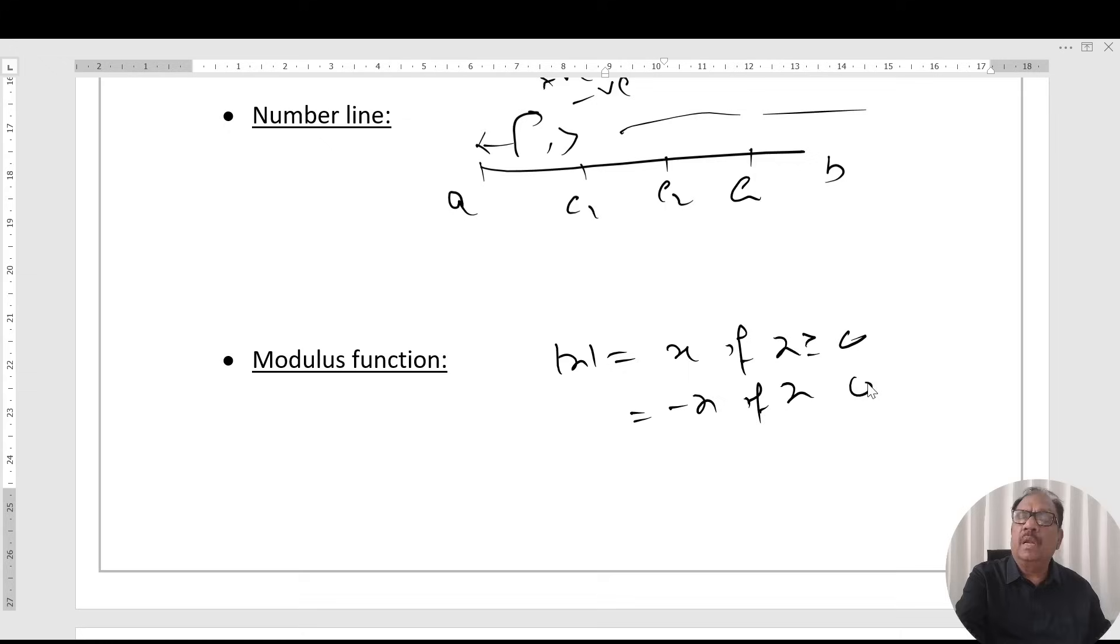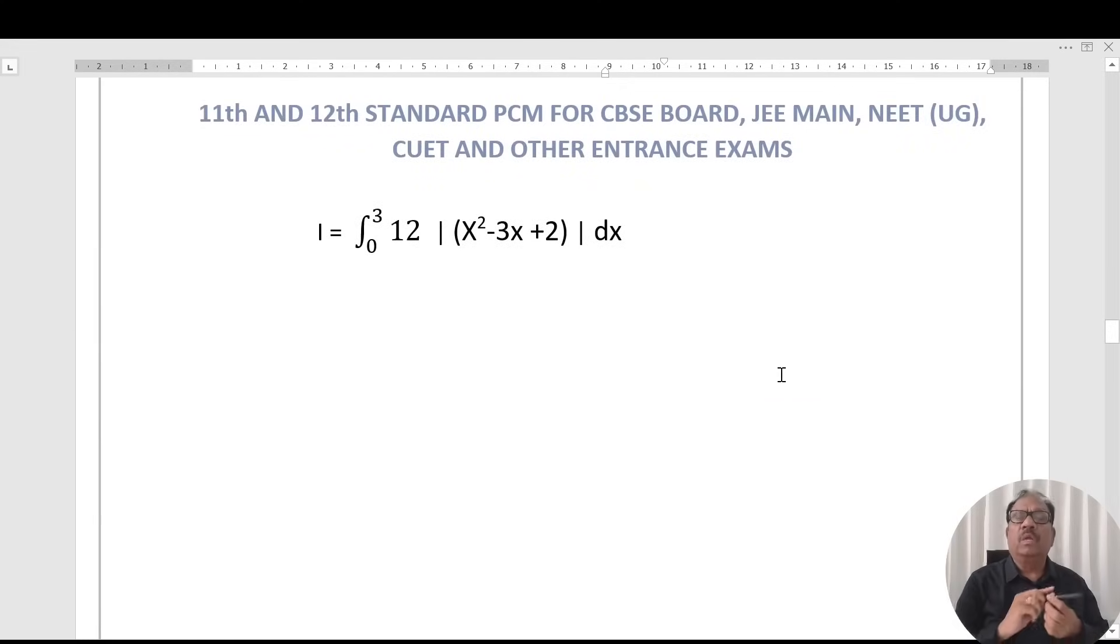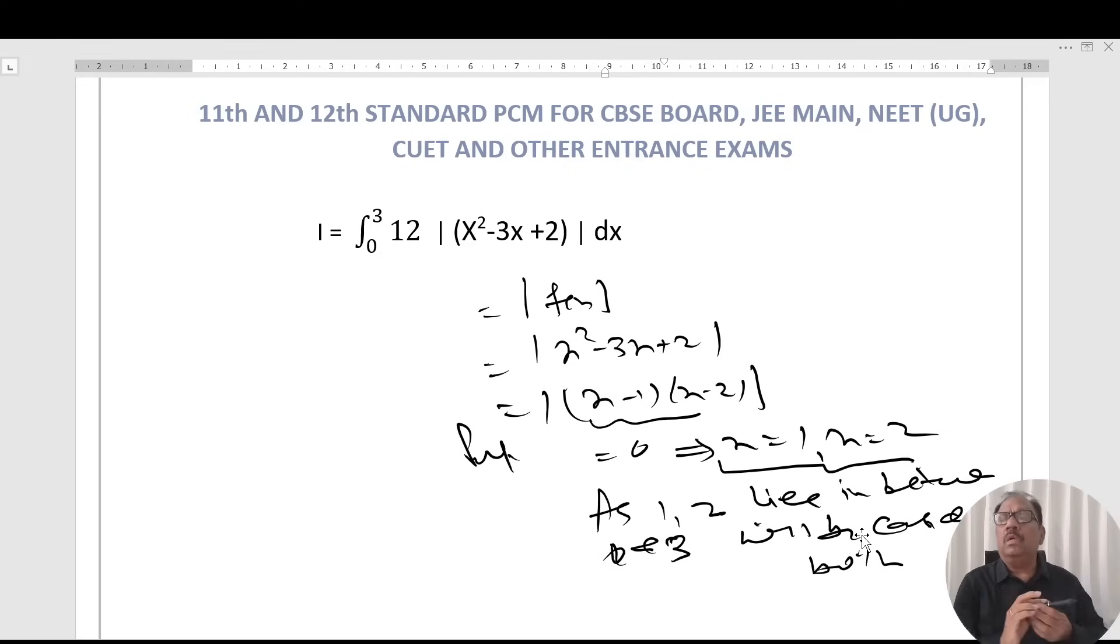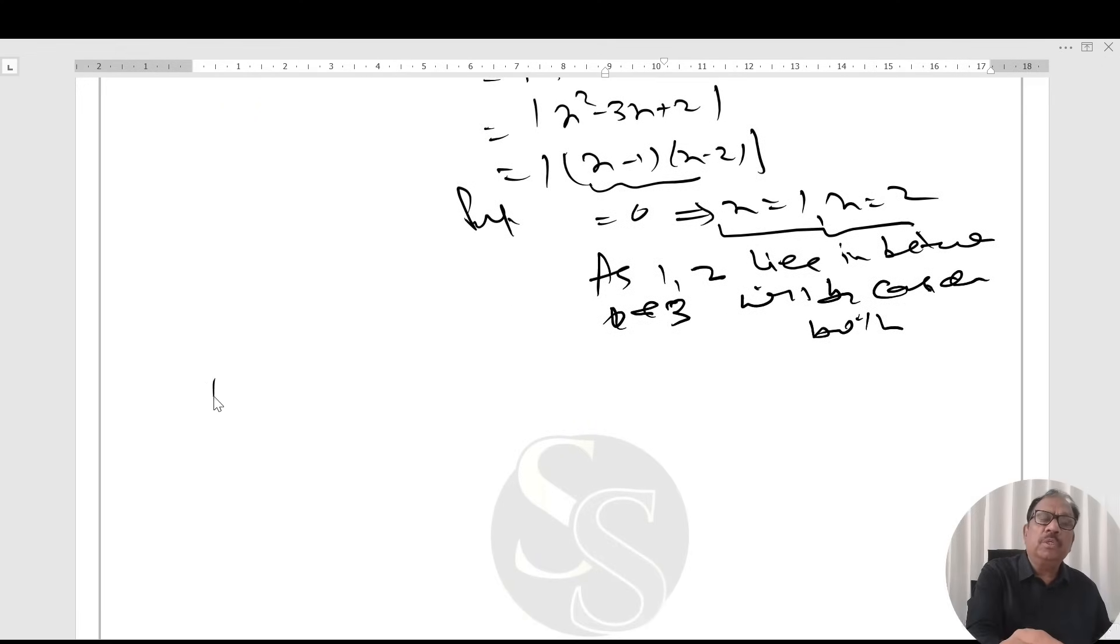Now starting the question. In this case, function f(x) is x squared minus 3x plus 2. Factorize it: (x minus 1)(x minus 2) equals 0. This comes out to be x equals 1 and x equals 2. As 1 and 2 lie in between 0 and 3, both will be considered.